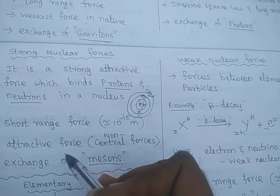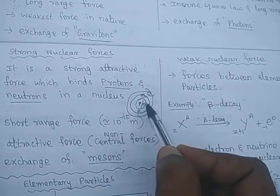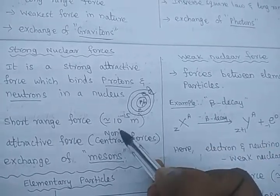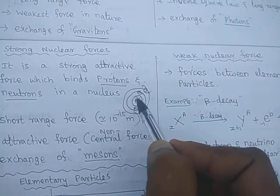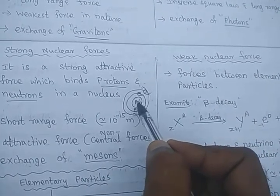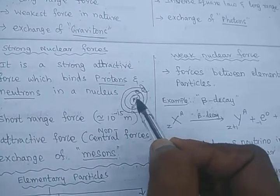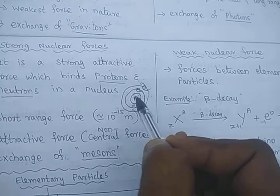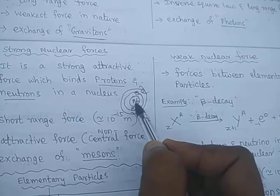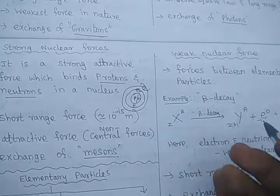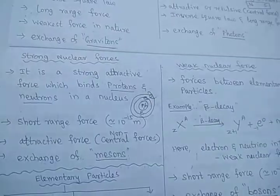Consider the chlorine atom — it has 17 protons and 17 electrons revolving around it. Those 17 protons are present only inside the nucleus. Due to electrostatic repulsion, positive-positive charges always repel each other, so the stability of the nucleus must break. But it does not break — these 17 protons remain inside the nucleus. This is because, apart from electrostatic repulsion, there is one attraction taking place. That attractive force is the strong nuclear force.